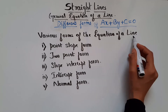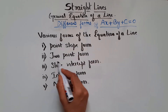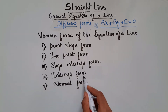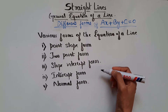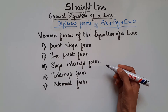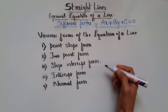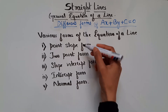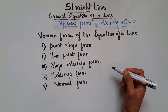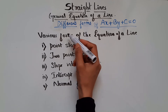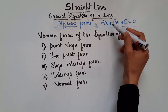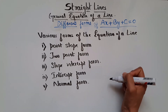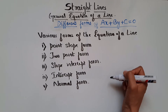We have already seen various forms of equation of a line: point-slope form, two-point form, slope-intercept form, intercept form, and normal form. In those, they used to give the condition of the line — like the line is passing through certain points, or they give the x-intercept, y-intercept, or the angle the line makes along the x-axis. Depending on the parameters, we used to go for any of these forms to write the equation of the line. In this video, we are seeing different forms of AX plus BY plus C equal to 0 — meaning they give the equation of the line and we have to find the parameters like x-intercept, y-intercept, and slope.